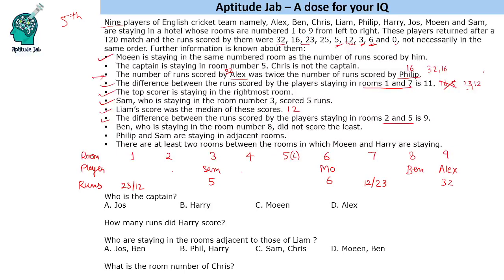The only valid possibility for rooms 2 and 5 with a difference of 9 is 16 and 25, since 12 and 3 are ruled out because 12 is already assigned to rooms 1 or 7, and 23 is also in rooms 1 or 7. So rooms 2 and 5 have 16 and 25 runs. Philip scored 16, and Philip and Sam must be in adjacent rooms — Sam is in room 3, so Philip goes in room 2 with 16 runs. Therefore room 5 has 25 runs.